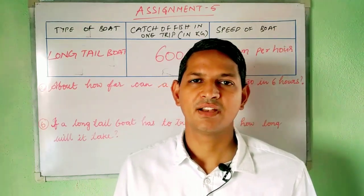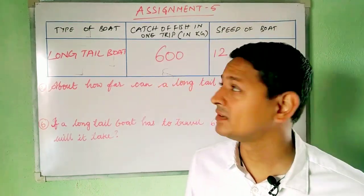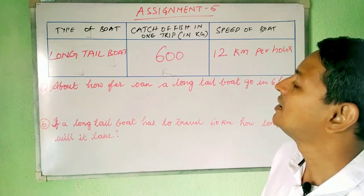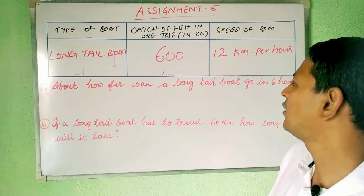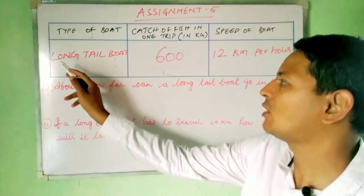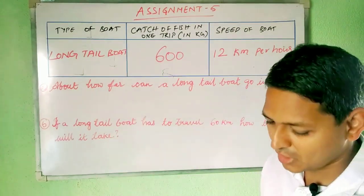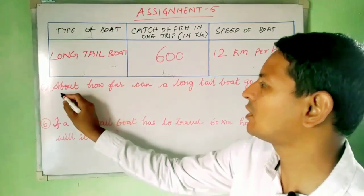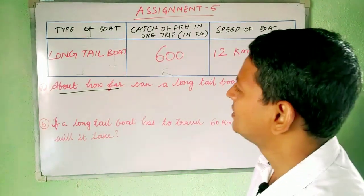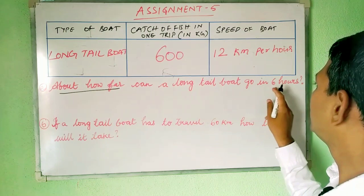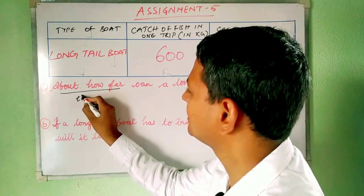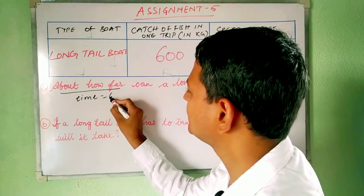Hi children, let us find the solutions for assignment 5. The first question is about how far a long tail boat can go in 6 hours. So here, 'about how far' means they are asking us about the distance. Time is given as 6 hours.